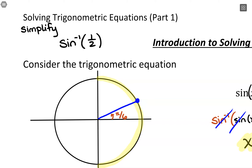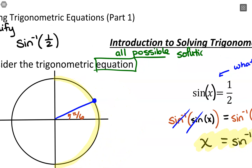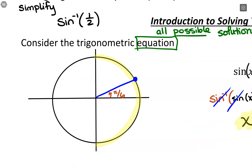What changes when we're solving equations is that we want all possible solutions. So we go through that format using what we learned, but we need to expand it — what other possibilities are there? Where else do we have a y-coordinate of positive 1/2? If we reflect that over, we could also have cases that were outside of how we limited our inverse function, because here we want every possible value for x.